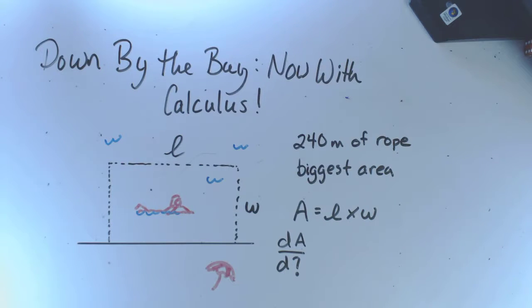This is my favorite math problem. If you were in grade 9, I would have given you this question, and it has a lot of nice mathematical realizations as you're working through it. You're given 240 meters of rope, and you need to fence off this area down by the beach.